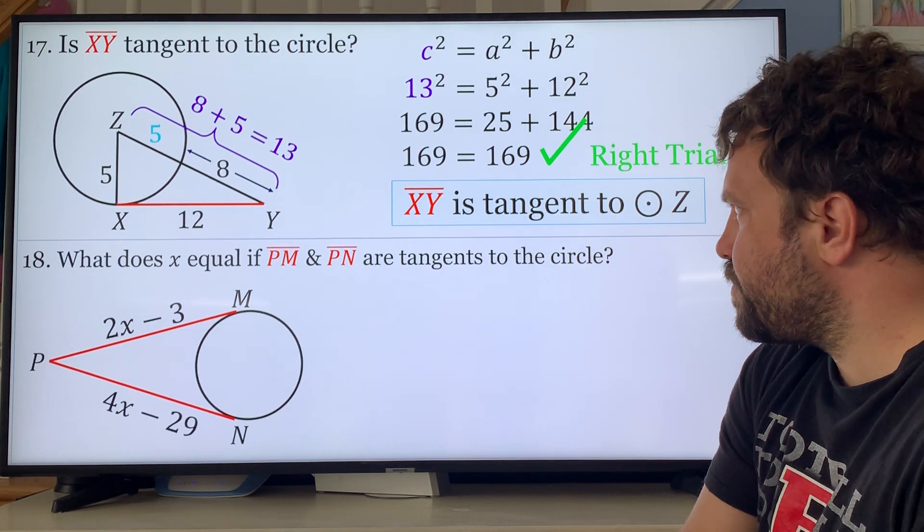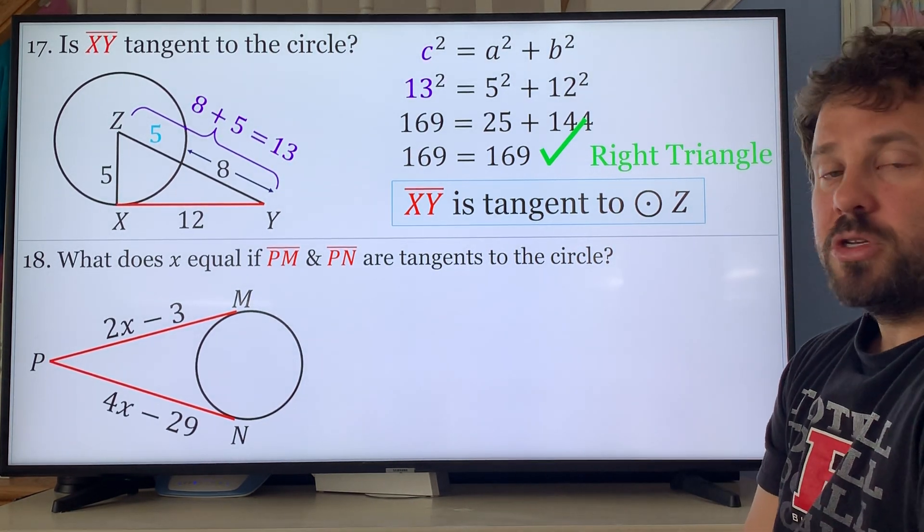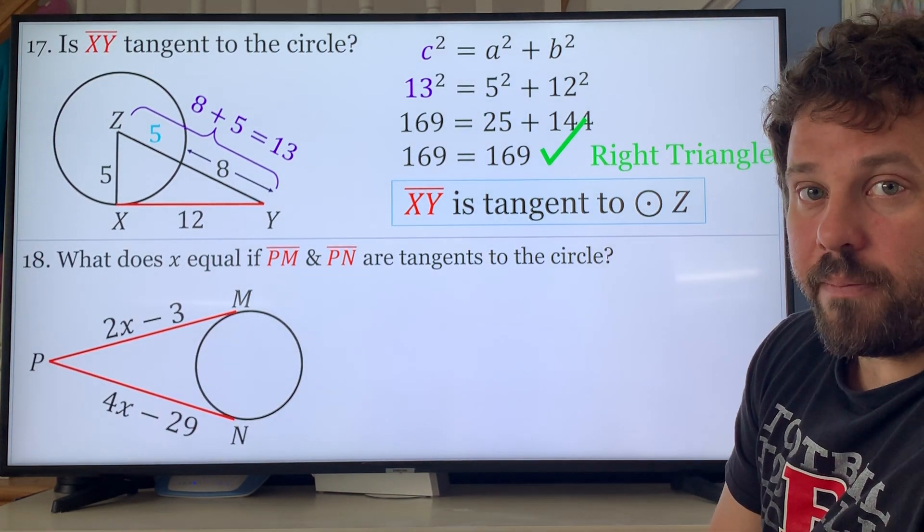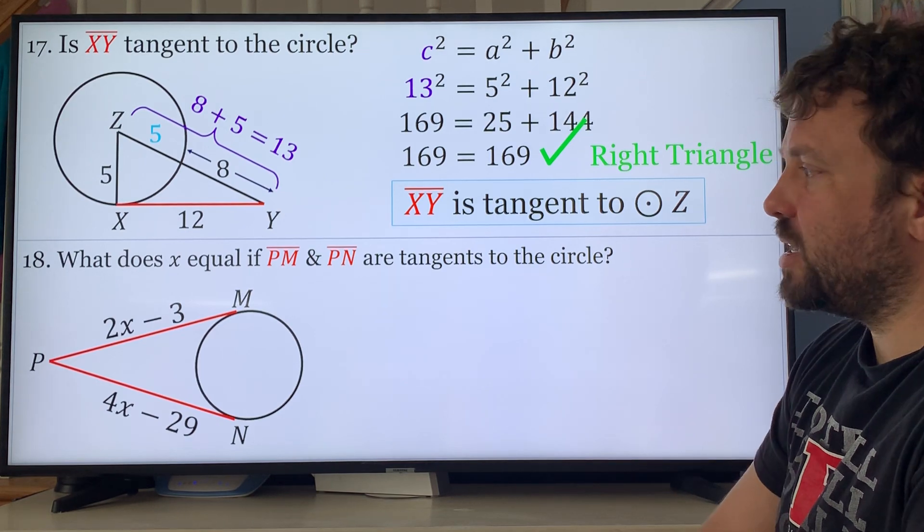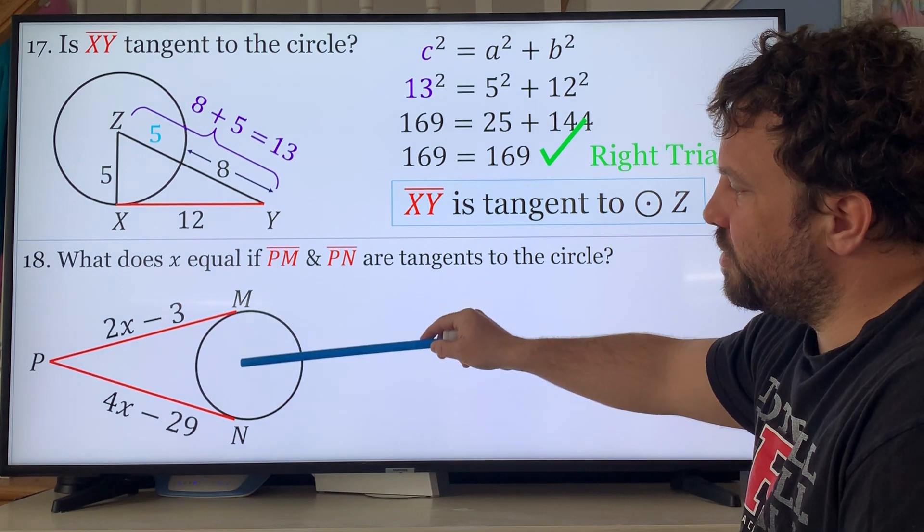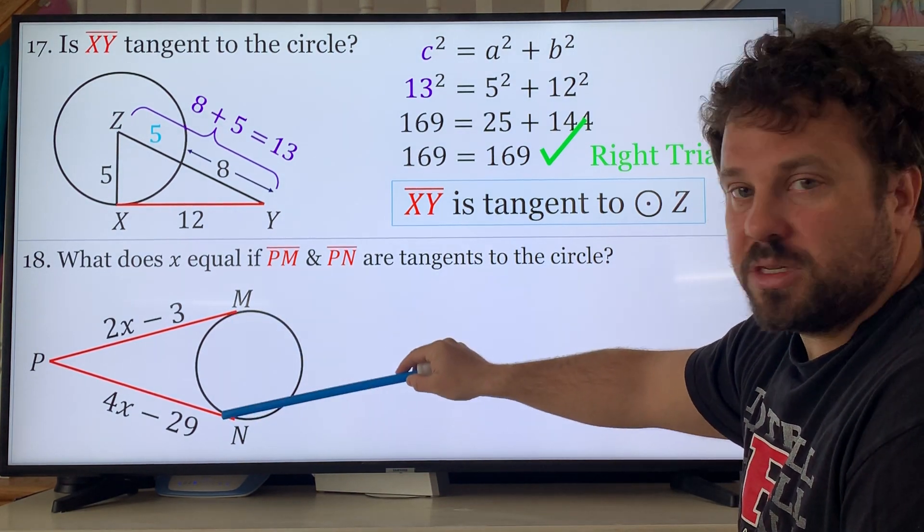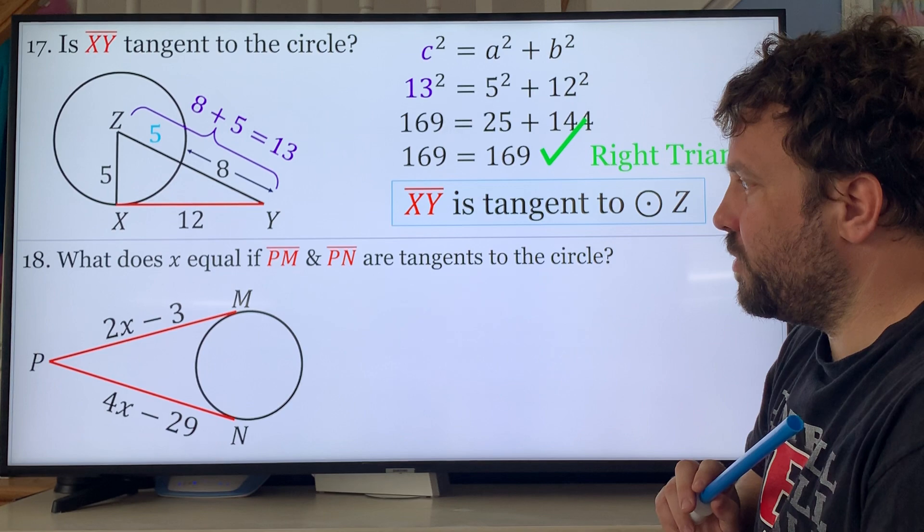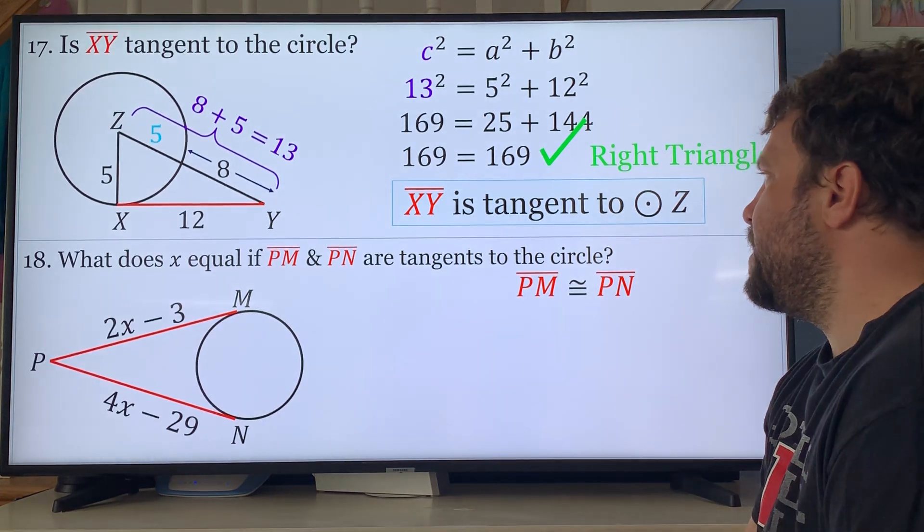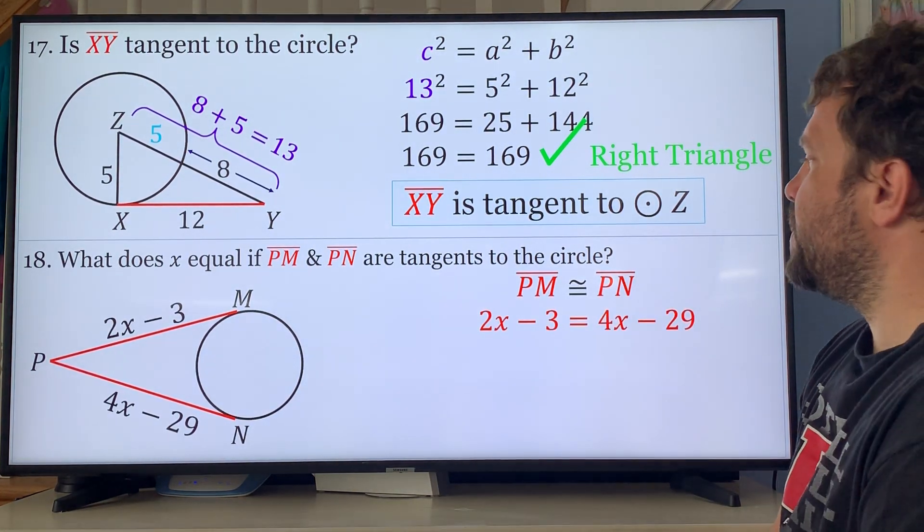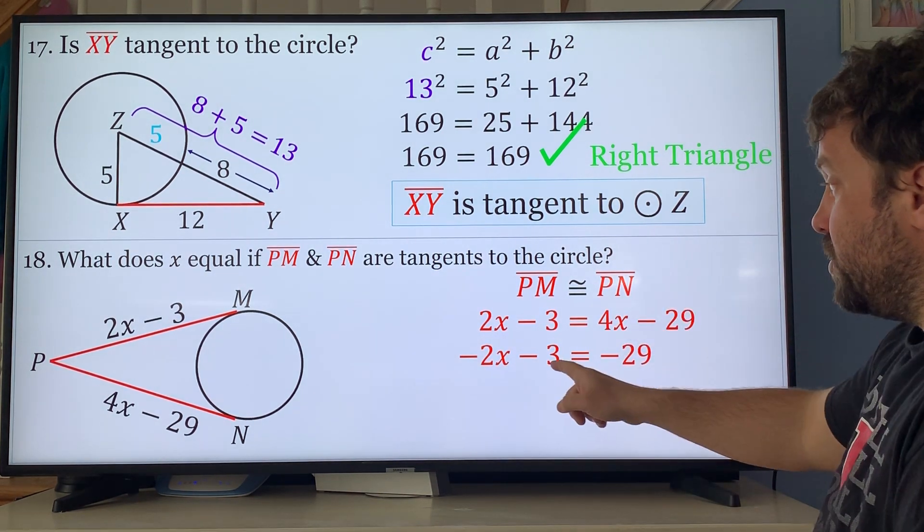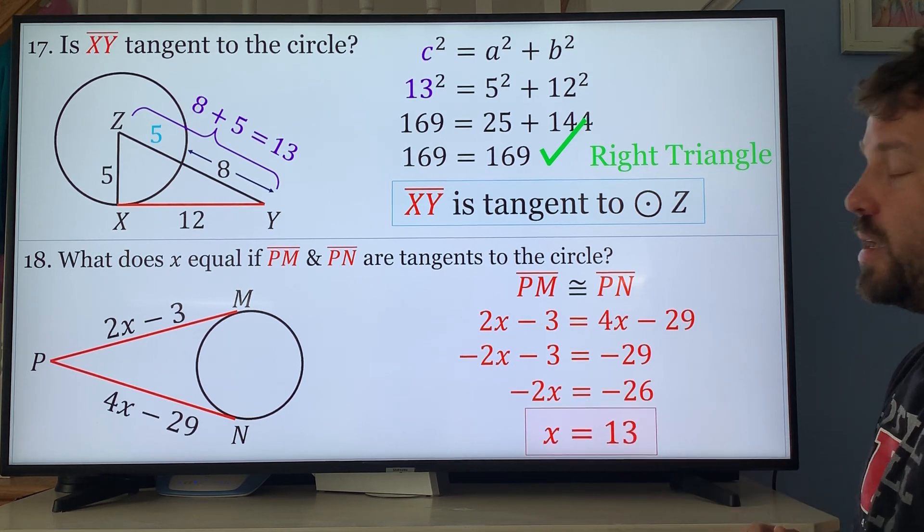Number 18: what does x equal if PM and PN are tangents of the circle? You should remember the rule that tangents are always equal. Two tangents that come from the same point are going to be equal because they are the same distance and they both form radiuses and those radiuses are equal and they form right angles. Therefore they also share this line, by HL they're equal. So you just simply set them equal to each other: 2x - 3 = 4x - 29. Subtract 4x from both sides, add 3 to both sides, divide by negative 2 and get 13.